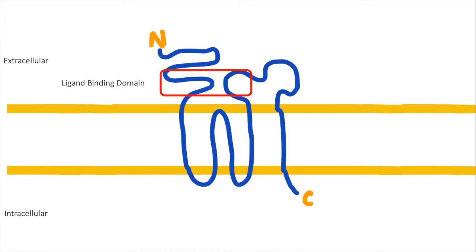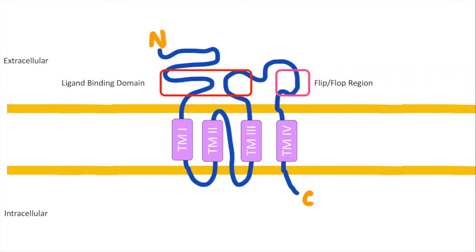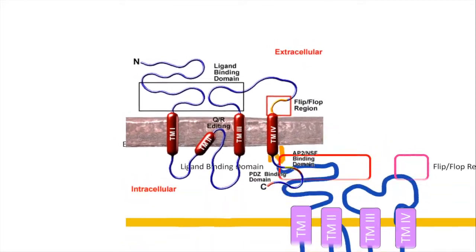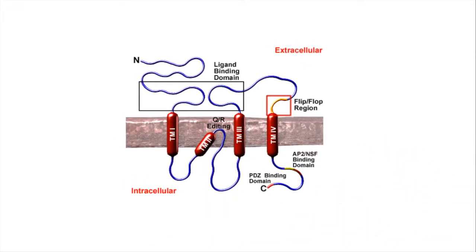There are four membrane spanning domains: TM1, 2, 3, and 4. This region is called flip-flop region. All AMPA receptor subunits exist as two splice variants. Only a few amino acids change, but the effect is dramatic.